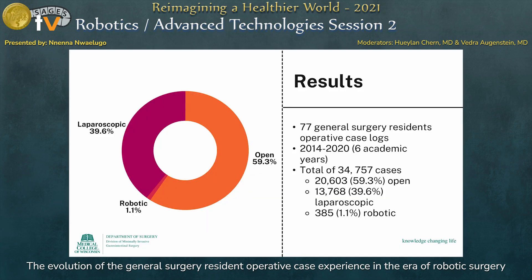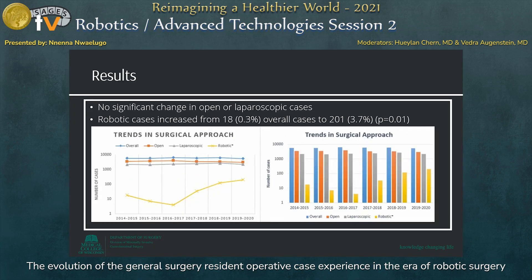The operative case logs from 77 general surgery residents were analyzed, and the residents participated in a total of 34,757 cases, of which 59.3% were open, 39.6% laparoscopic, and 1.1% robotic. Between 2014 and 2020, there was no significant change seen in the residents' number of open or laparoscopic cases. However, there was a significant increase in the number of robotic cases, which went from 18 overall cases in the 2014–2015 academic year to 201 in the 2019–2020 academic year.